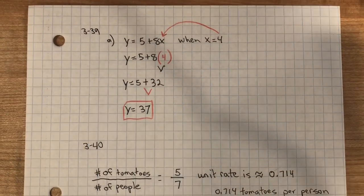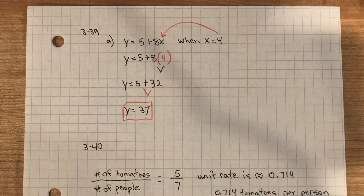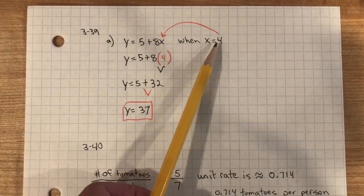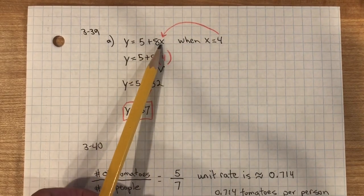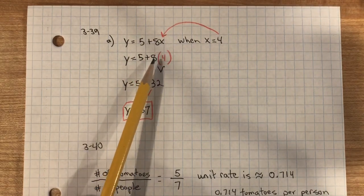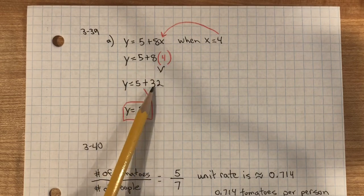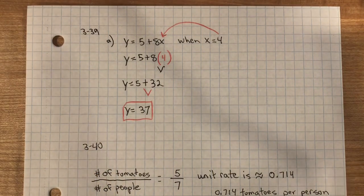In problem 339, you need to evaluate each equation. When x equals 4, you need to substitute x for the value of 4. Following the order of operations, we're going to multiply first. 8 multiplied by 4 is 32. 5 plus 32 is 37. y equals 37.